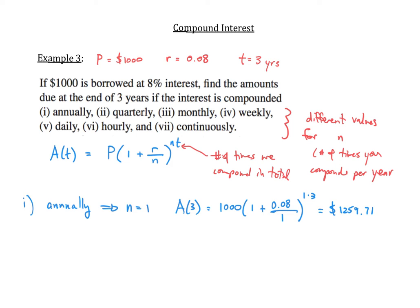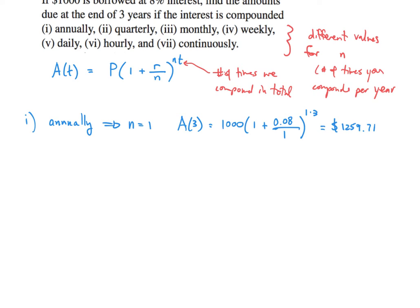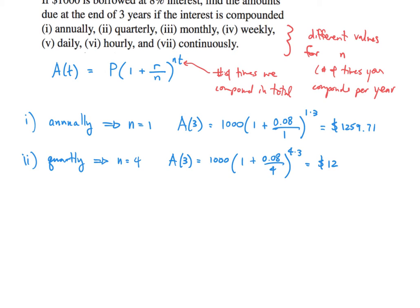Let's look at part 2: quarterly. Quarterly implies you're going to compound four times per year — a quarter is one-fourth. So when we calculate A(3) in this situation, it's going to be 1,000 times 1 plus 0.08 divided by 4, all raised to the 4 times 3 power, giving us $1,268.24. We've compounded a total of 12 times because it's four times a year for three years, and we can see that we've earned more interest because the amount is higher.